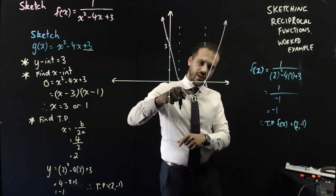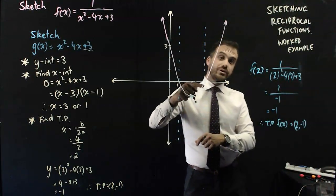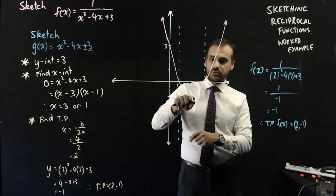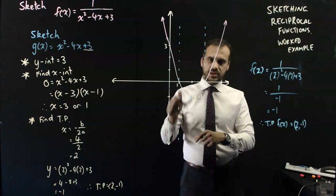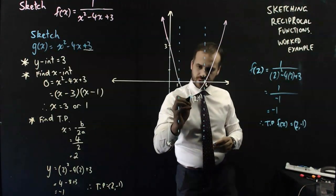And similarly, the function from here to here is increasing. That means that the reciprocal function is going to be decreasing. So I get this sort of function here.